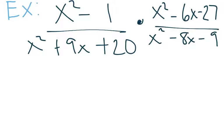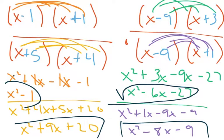Our example is x squared minus 1 over x squared plus 9x plus 20 times x squared minus 6x minus 27 over x squared minus 8x minus 9.